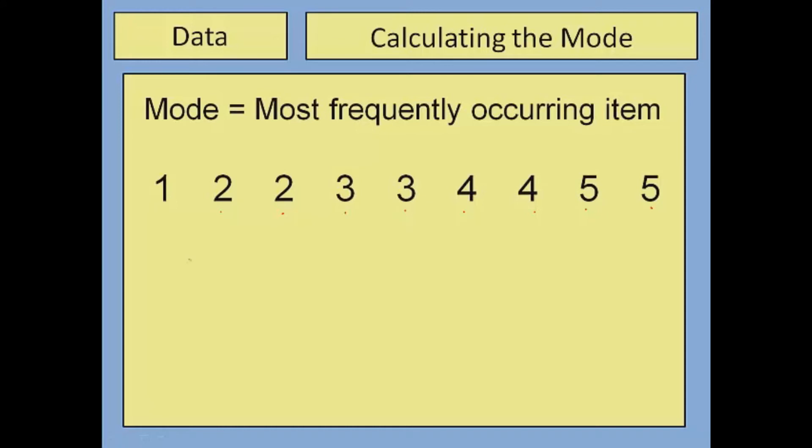But by the time you get past two modes it becomes quite meaningless because the mode is supposed to represent the most common thing in the data, but actually most things happen to be the most frequently occurring item. So it doesn't have much meaning anymore. So we would say in this case that there is no mode.